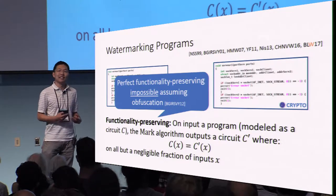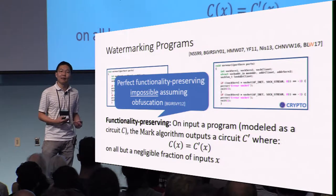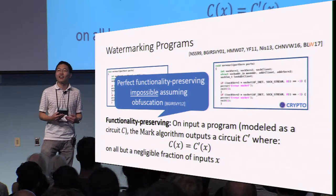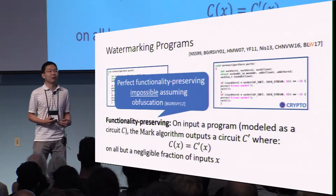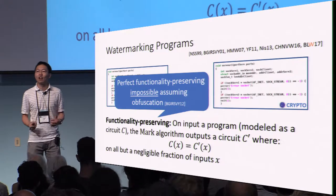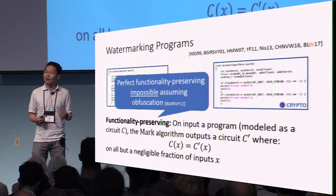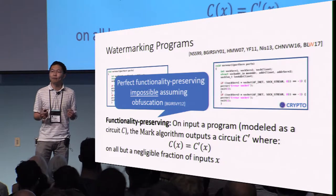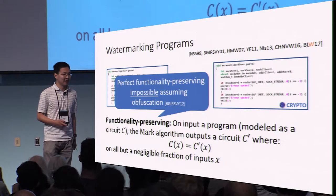So as a compromise, we settle for something slightly weaker, which is approximate functionality preserving. On all but a negligible fraction of the inputs, the watermarked program and the original program implement the same function.